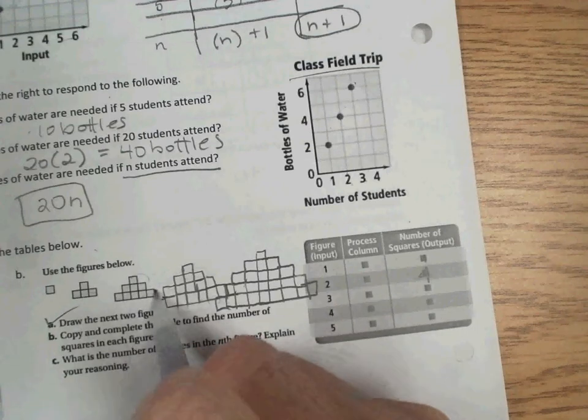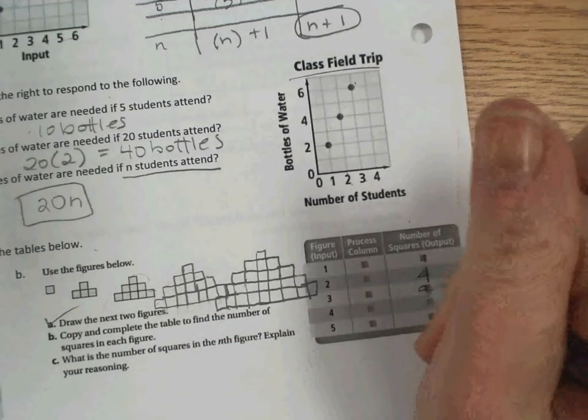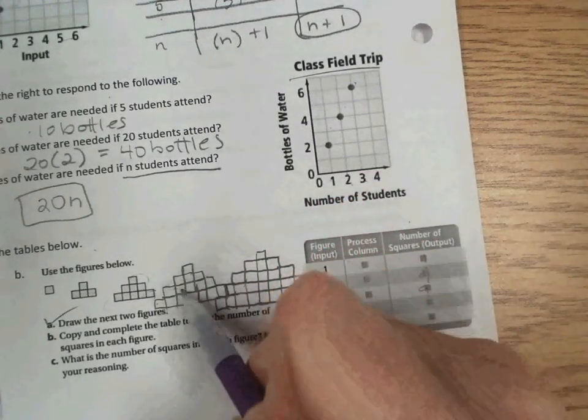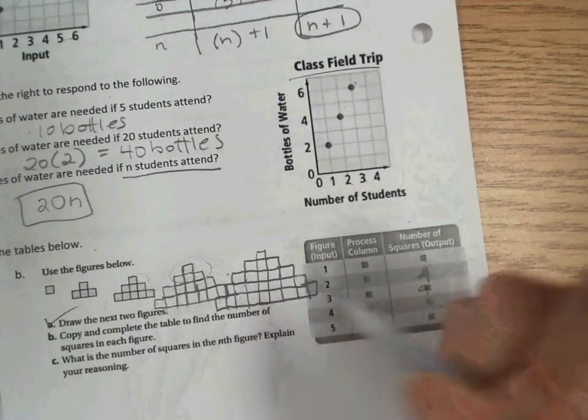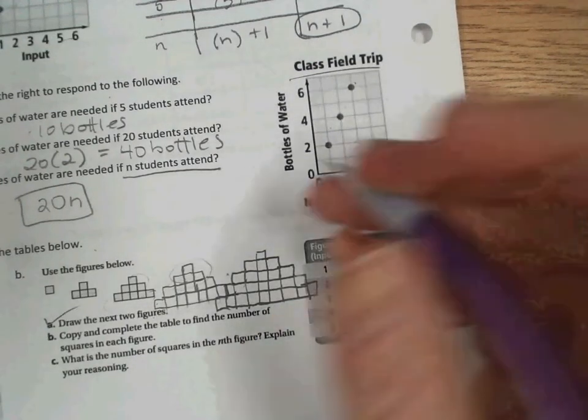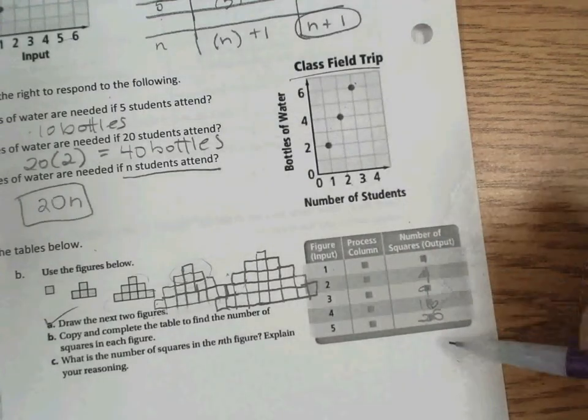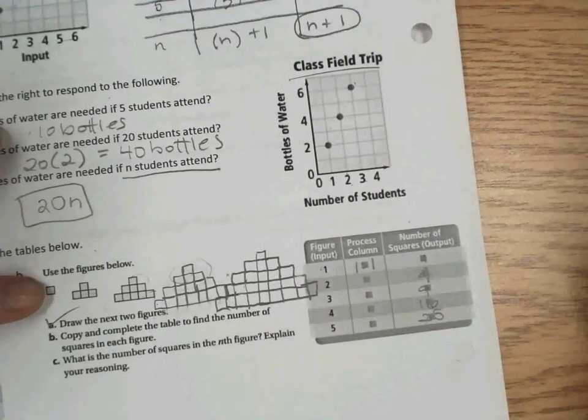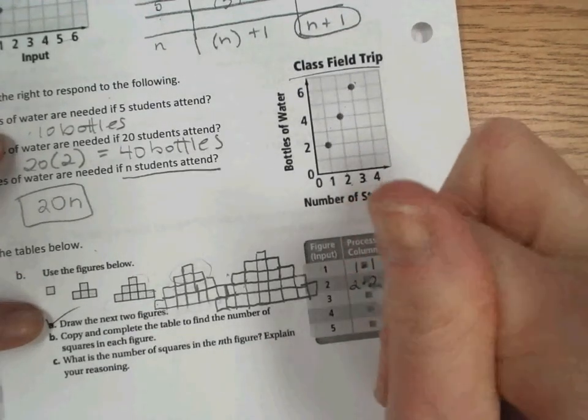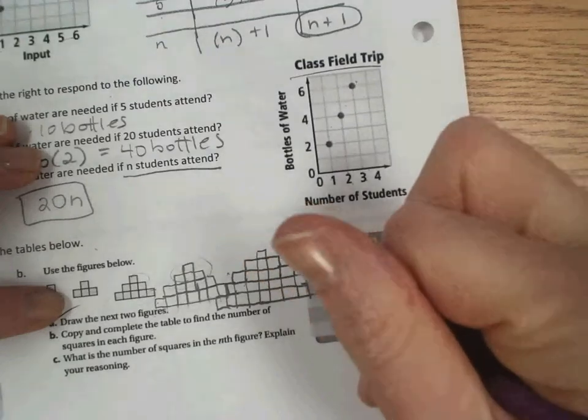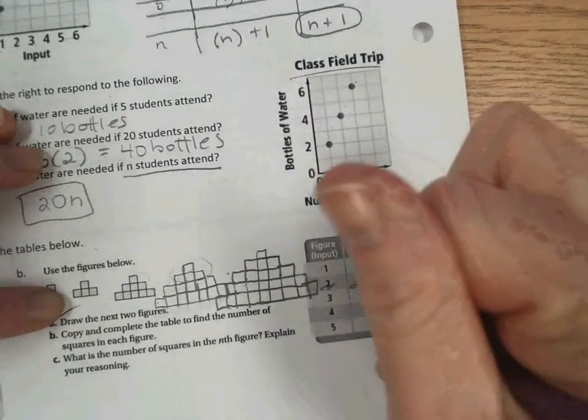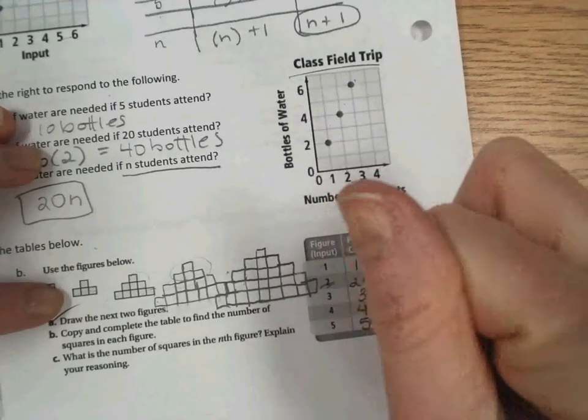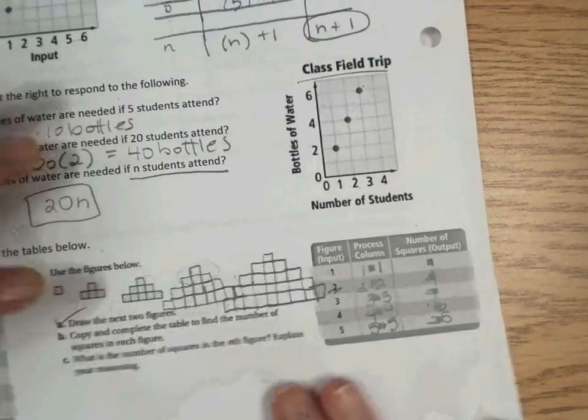So we have our 4, and then we're adding on 5 more. So that's 9. And then in our next one, we have our 9. And then we're adding on 7 more. So we get 16 and 25. So maybe these numbers look familiar. In the first one, the process, we can start to see is to multiply the figure number, the input, times itself.